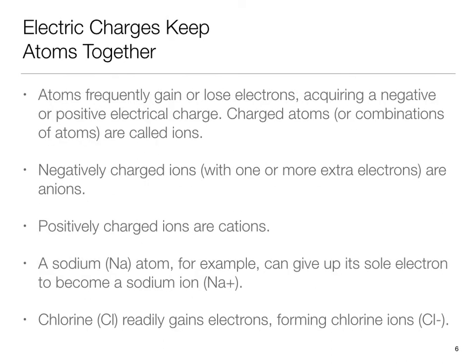Atoms frequently gain or lose electrons, acquiring a negative or positive electrical charge. Charged atoms, or combination of atoms, are called ions. Negatively charged ions, with one or more extra electrons, are anions. Positively charged ions are cations. A sodium atom, for example, can give up an electron to become sodium ion Na+. Chlorine readily gains electrons, forming chlorine ions Cl-.